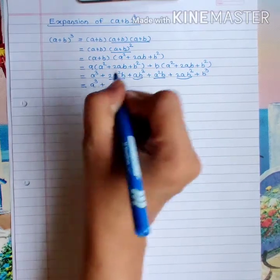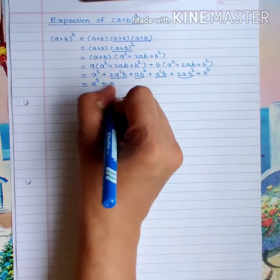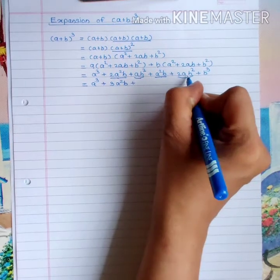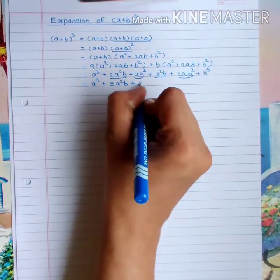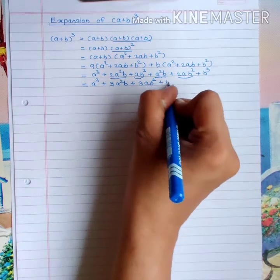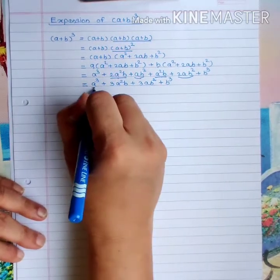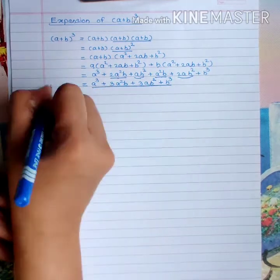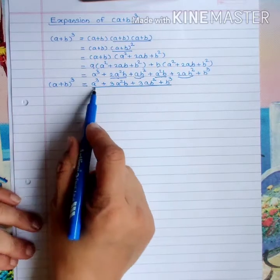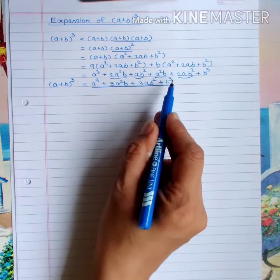So the final formula is: a³ + 3a²b + 3ab² + b³. This is the formula for the expansion of (a+b)³.